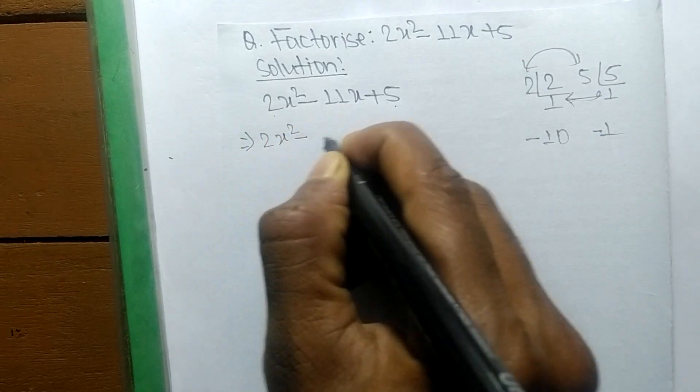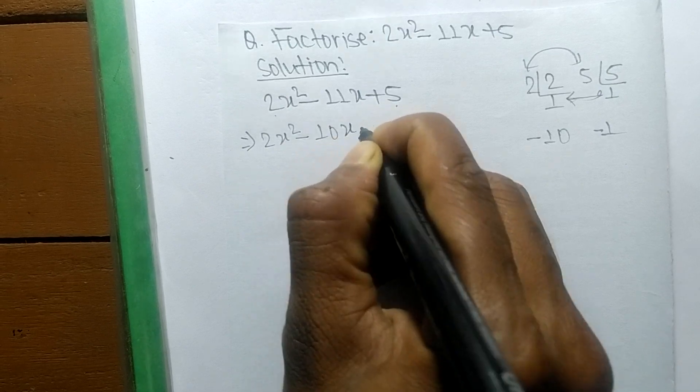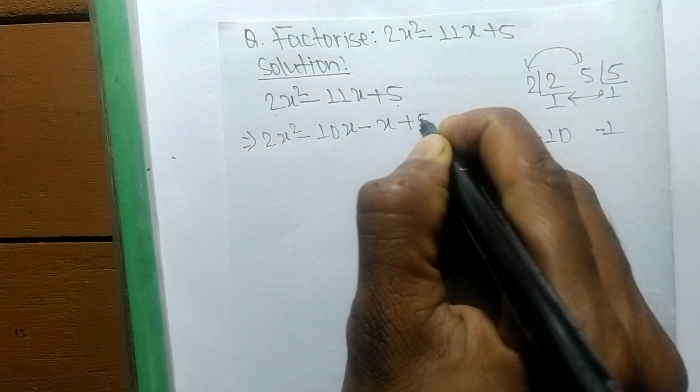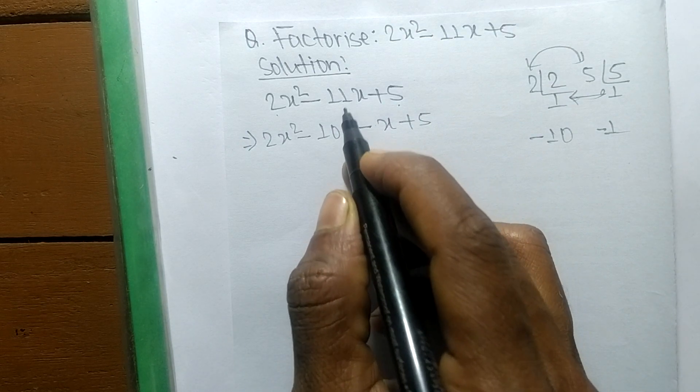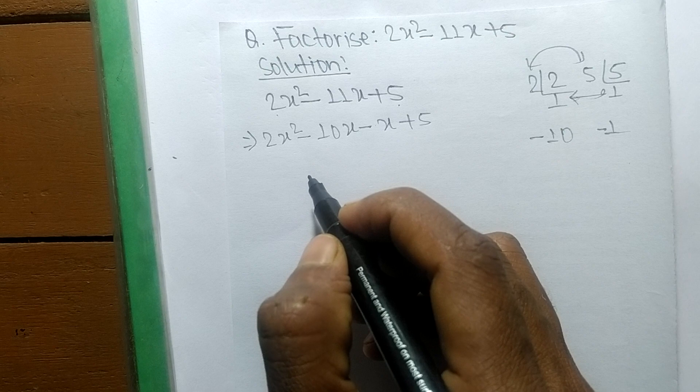We can write it as 2x² - 10x - x + 5. So minus 10x minus x means it is minus 11x.